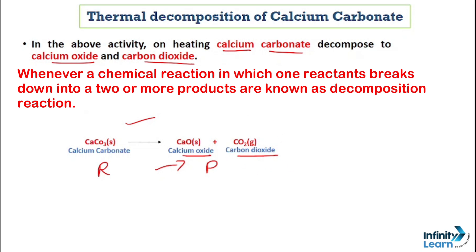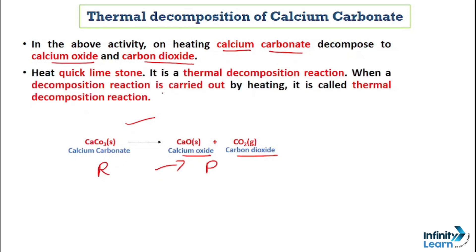To recap: in a chemical reaction, when one reactant breaks down into two or more products, that reaction is known as a decomposition reaction. Additionally, whenever a decomposition reaction is carried out by heating, it is also known as a thermal decomposition reaction.